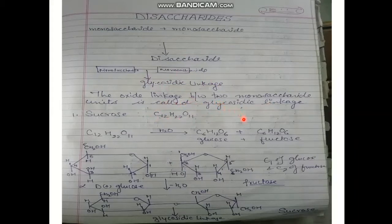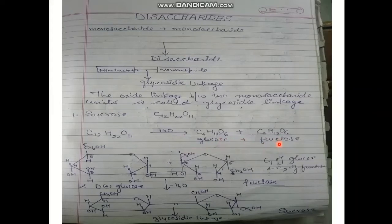The first category of disaccharides is sucrose. Sucrose has the molecular formula C12H22O11, and when hydrolyzed it gives glucose and fructose. Glucose and fructose have the same molecular formula but one is an aldose sugar and the other is a keto sugar. Here I have made the pyranose structure of glucose and the furanose structure of fructose.